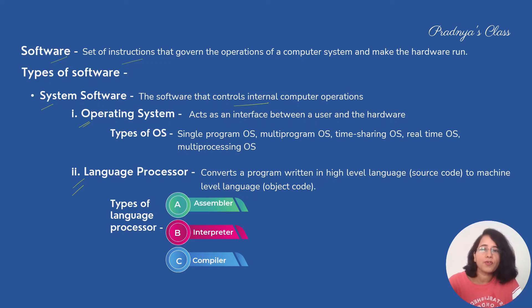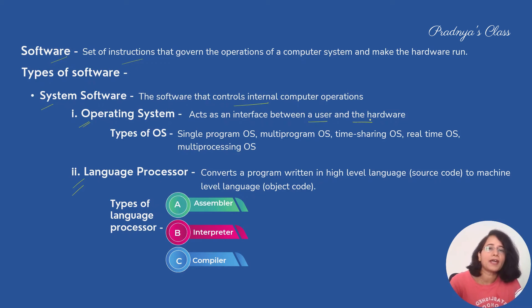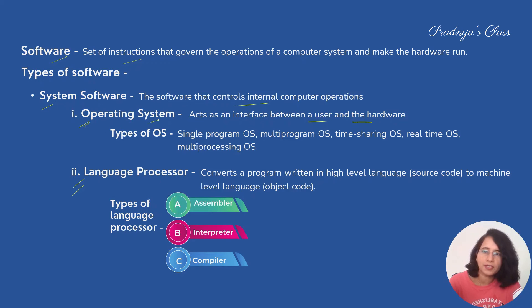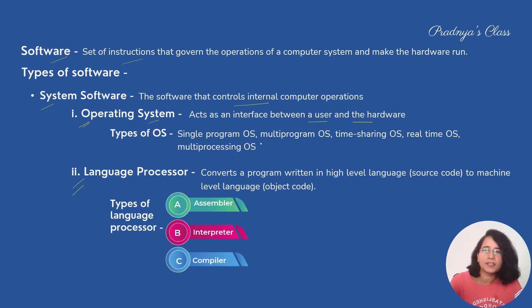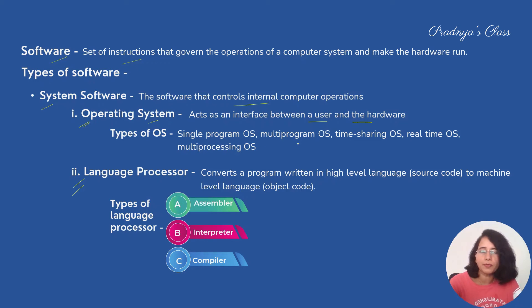The operating system is the interface between the user and the hardware — it is the most important software of the computer system. There are different types of operating systems: single-user, multi-user, multi-program, and multi-processing operating systems.